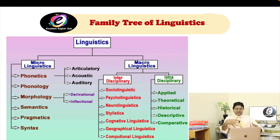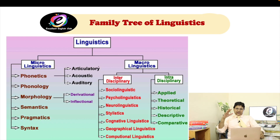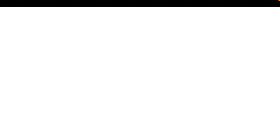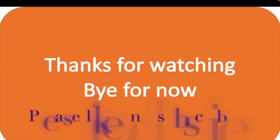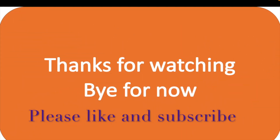So these are the different types of linguistics — this is the family tree of linguistics. I have mentioned the most common branches. That's all. Thank you very much. See you in the next video. Bye bye.